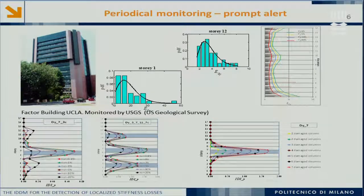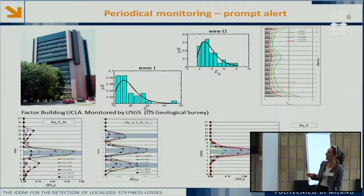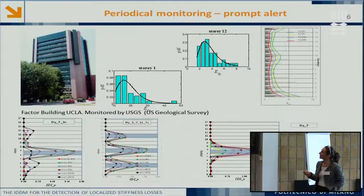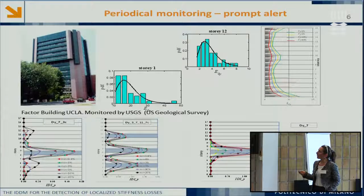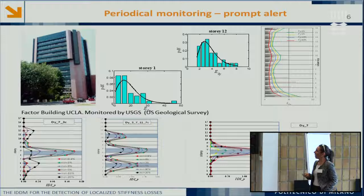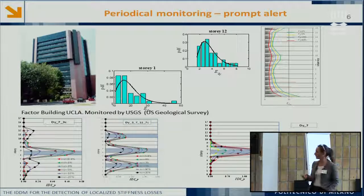The damage scenarios for the Factor building were all artificially modeled numerically since the building was never actually damaged. The blue bar indicates the real location of damage, and the curves represent the damage parameter. The method always finds the damage location, even with noise in the recorded signal. We also investigated the capability of the method to follow the severity of damage, and found that the damage parameter increases with severity, though at the moment it is not possible to recover the actual value of stiffness loss from the damage parameter.